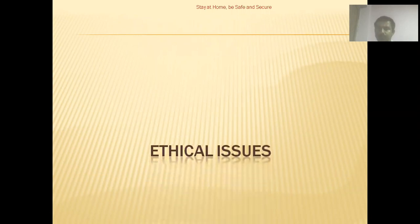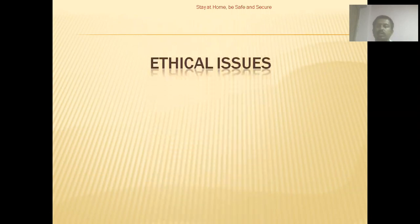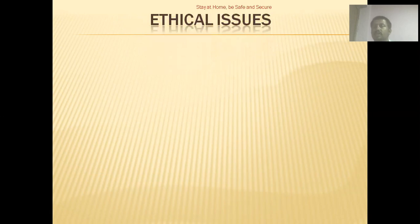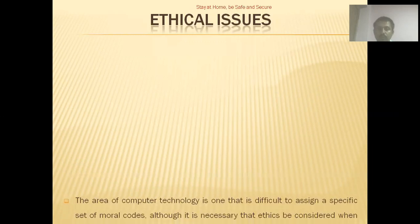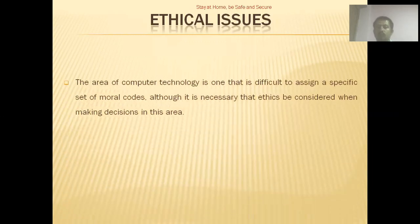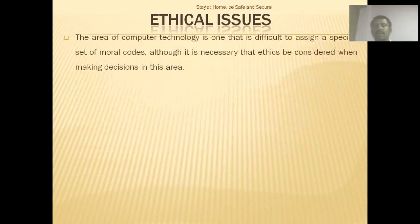Now let us go to our chapter. Ethical issues means the moral character of deciding what is right and what is wrong. It is not listed in any books or included in any sorts of rules, but should be decided by one's moral character. The area of computer technology is one that is difficult to assign a specific set of moral codes, although it is necessary that ethics be considered when making decisions in this area.